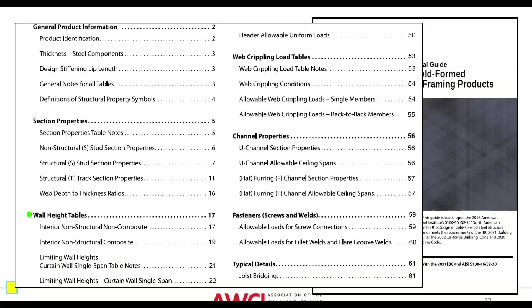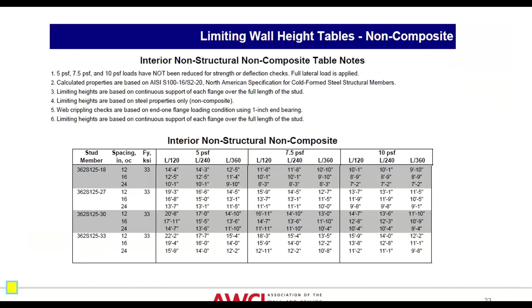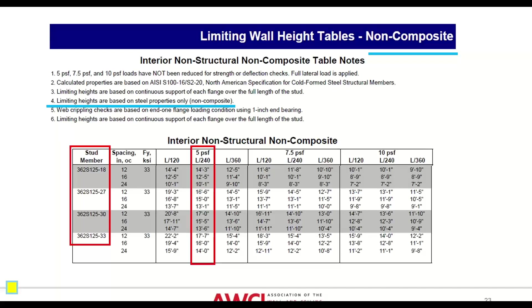Let's get back to the example. We know both composite and non-composite exist. Since in our example the board goes all the way up on both sides because this is a fire-rated partition, we'll look in the interior non-structural composite section. But first, let's go to page 17 and look at interior non-structural non-composite to see how limiting heights compare. In the non-composite table, limiting heights are based on steel properties only — not counting on gypsum board to stiffen flanges or add height. The parameters are 5 PSF and L/240.